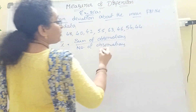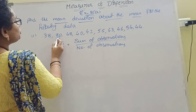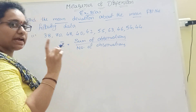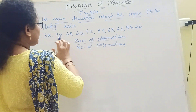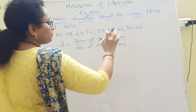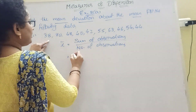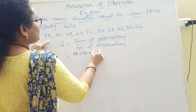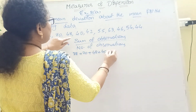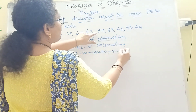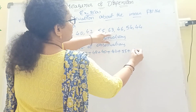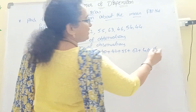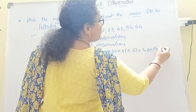How many observations are there? 1, 2, 3, 4, 5, 6, 7, 8, 9, 10 — total 10 observations. The sum of the observations is: 38 + 70 + 48 + 40 + 42 + 55 + 63 + 46, plus 44, total 10 numbers.